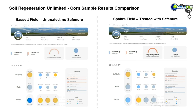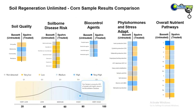That fungi-to-bacteria ratio of 1:183 versus 1:180 is a little bit more balanced on the treated side. Going down, we do see some differences in some of the nutrient pathways that we'll get into in more detail using the data analysis tools. This is what we call our heat map tool.